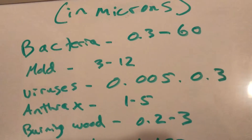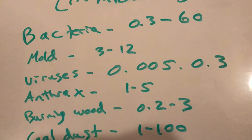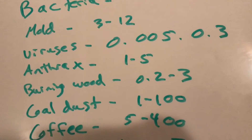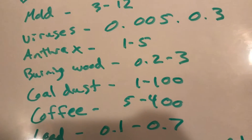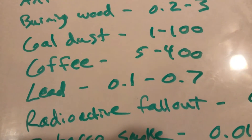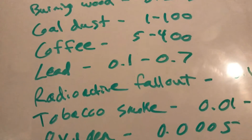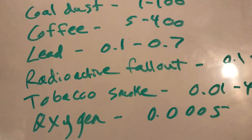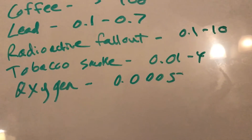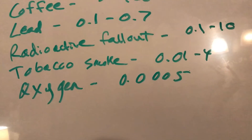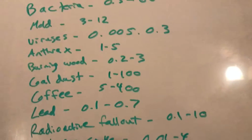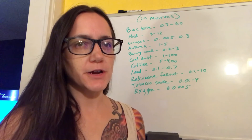So these are all in microns: bacteria is 0.3 to 60 microns, mold is 3 to 12 microns, viruses can be anywhere from 0.005 to 0.3 microns, anthrax is 1 to 5 microns, burning wood is 0.2 to 3 microns, coal dust is 1 to 100 microns, coffee is 5 to 400 microns, lead is 0.1 to 0.7 microns, radioactive fallout is 0.1 to 10 microns, tobacco smoke is 0.01 to 4 microns, and oxygen is 0.0005 microns.